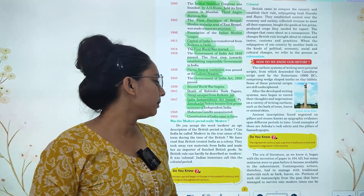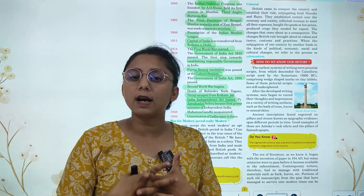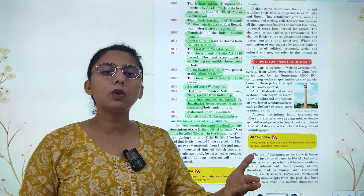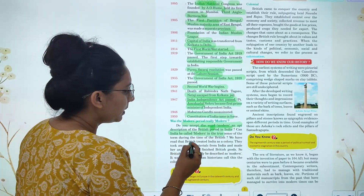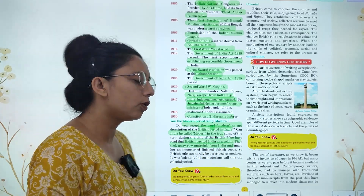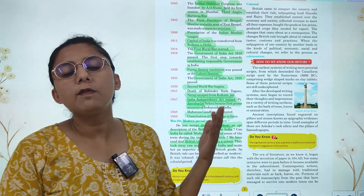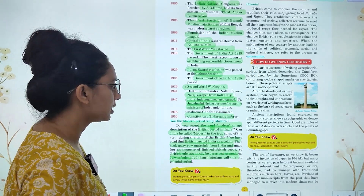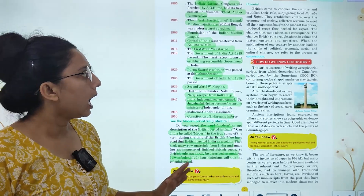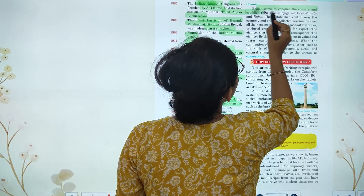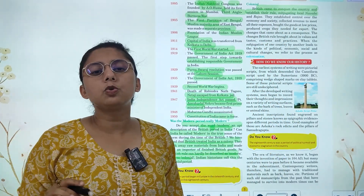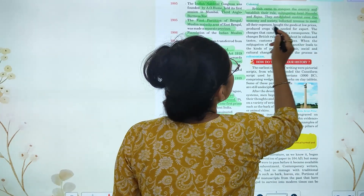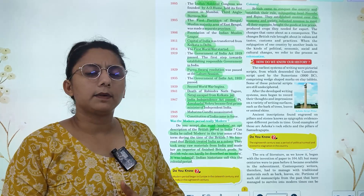Can India be called modern in the true sense? We have read that the British treated India as a colony. They took away raw material from here and received profit from there. British rule cannot be considered truly modern — it was colonial. Indian historians call this the colonial period.